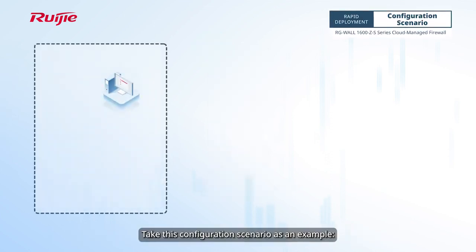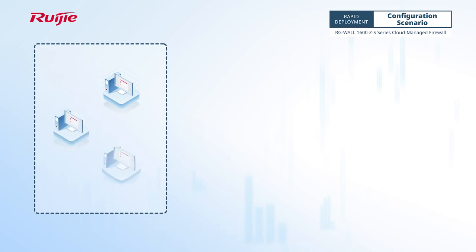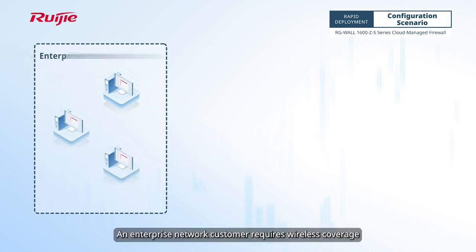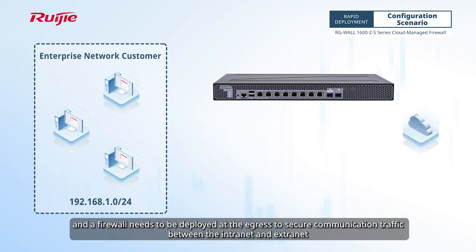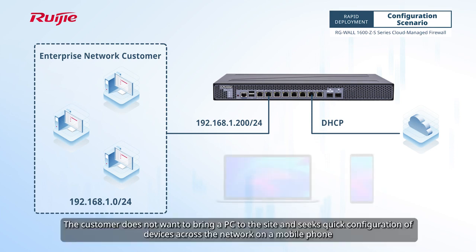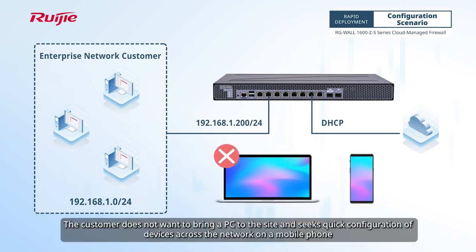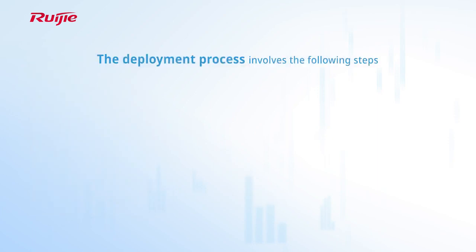Take this configuration scenario as an example. An enterprise network customer requires wireless coverage, and a firewall needs to be deployed at the egress to secure communication traffic between the intranet and extranet. The customer does not want to bring a PC to the site and seeks quick configuration of devices across the network on a mobile phone.